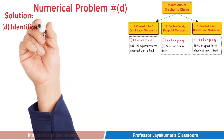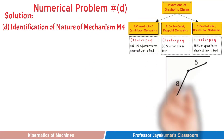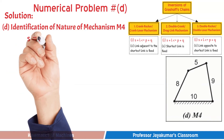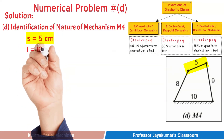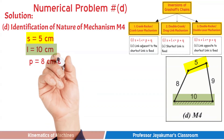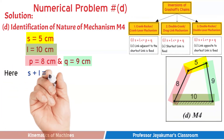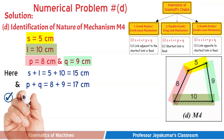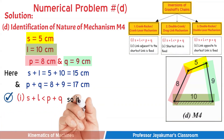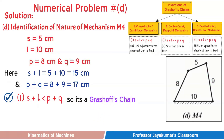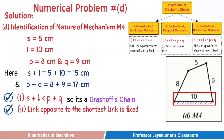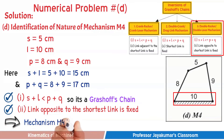Finally, let us identify the nature of Mechanism M4. By going through the various dimensions, we find the values of S, L, P, and Q. Here, S plus L is less than P plus Q, so Mechanism M4 is a Grasov's chain. The link opposite to the shortest link is fixed. Therefore, this Grasov's chain forms a Double-Rocker, also known as Double-Lever Mechanism.